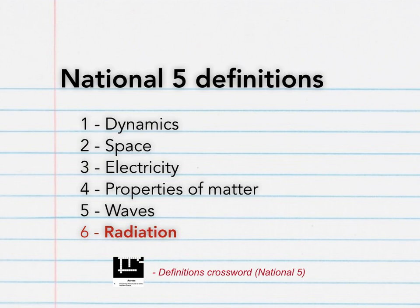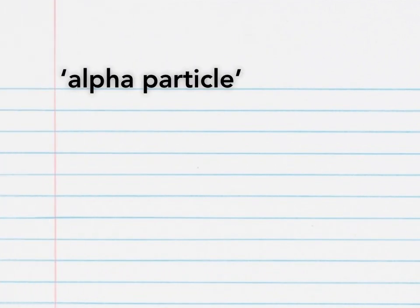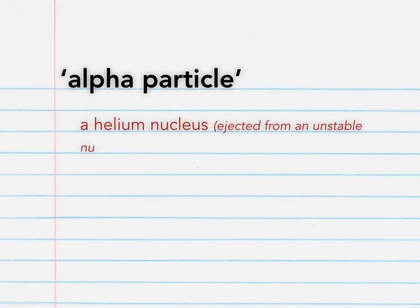We'll begin by looking at the three different types of nuclear radiation. Our first definition is alpha particle. An alpha particle is a helium nucleus ejected from an unstable nucleus. Alpha particles are positively charged, move at roughly 5% of the speed of light, and are the most ionising type of radiation.